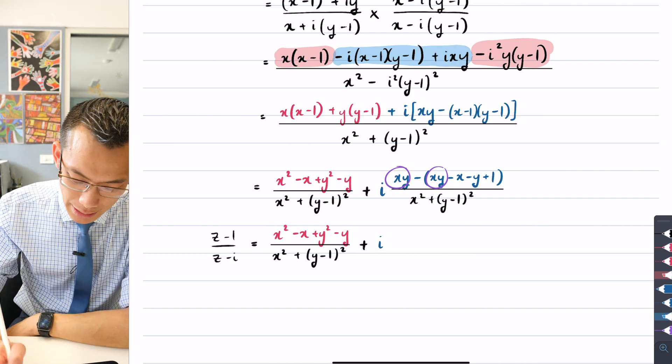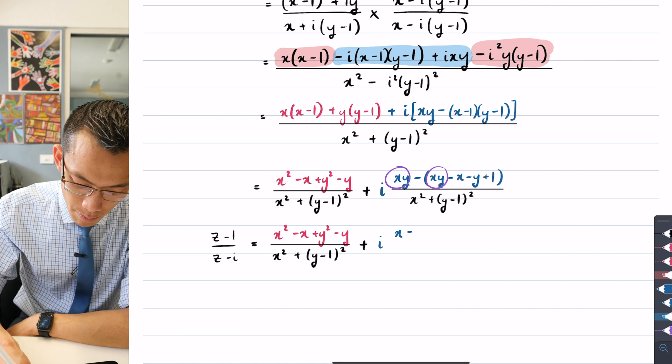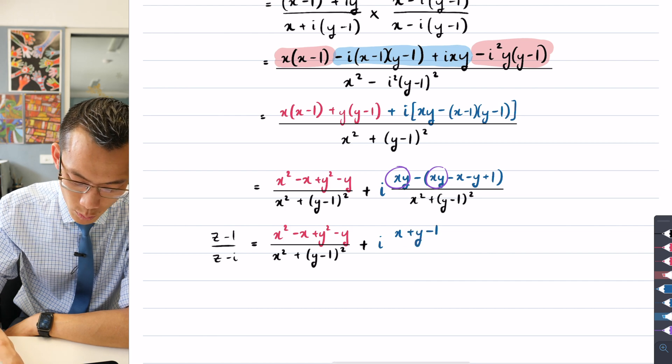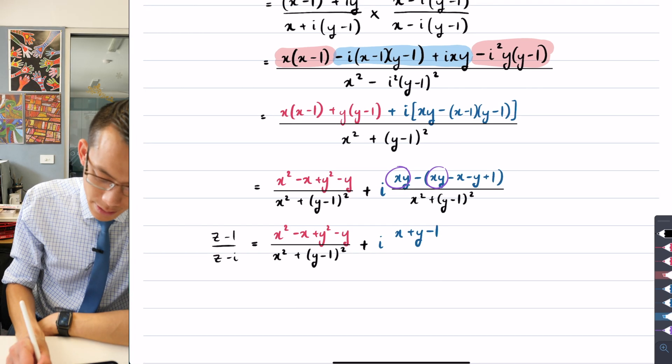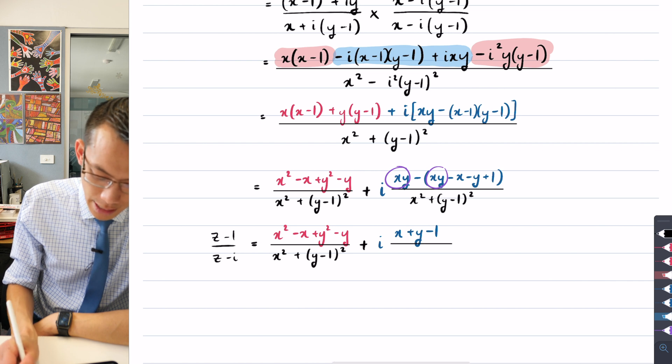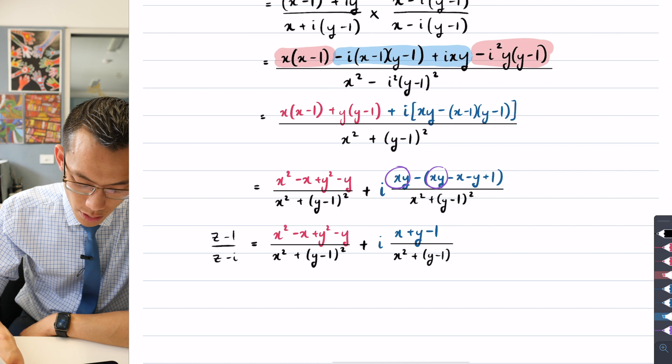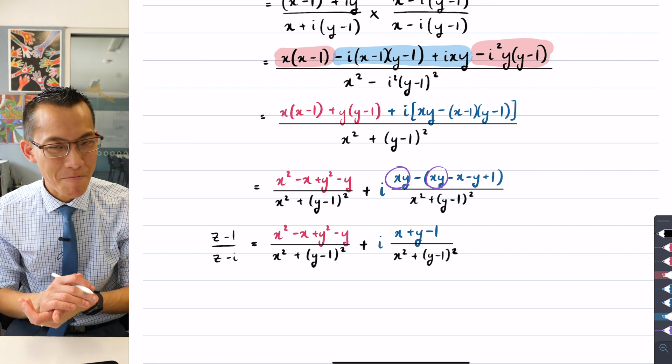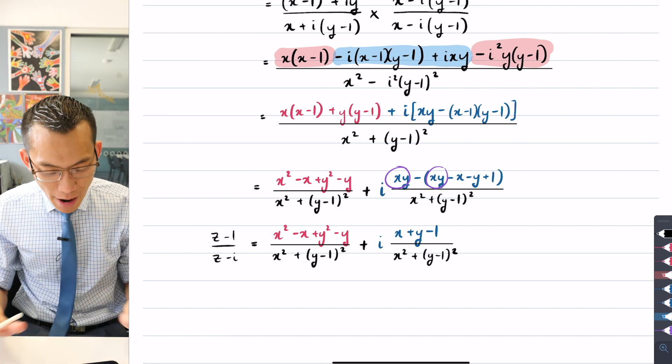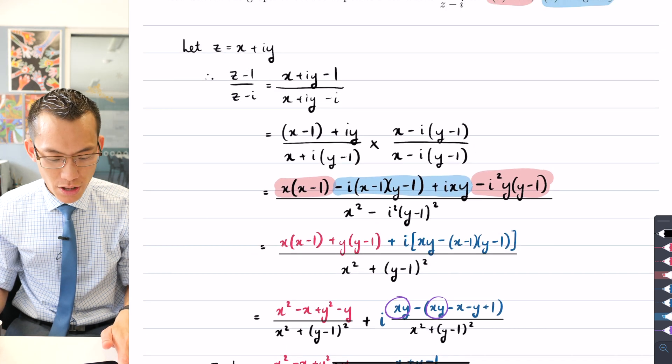xy is gone. That leaves me with (x + y - 1), and that is going to be divided by the same denominator that we saw earlier, x squared plus (y - 1) all squared. Okay, happy times.